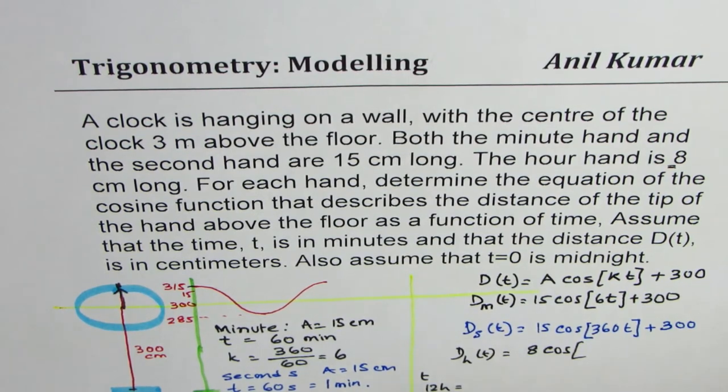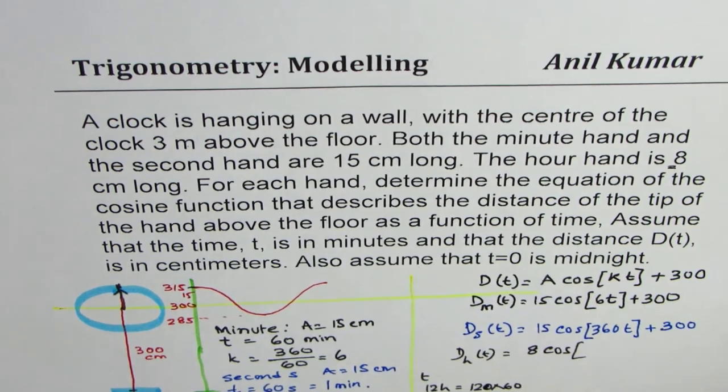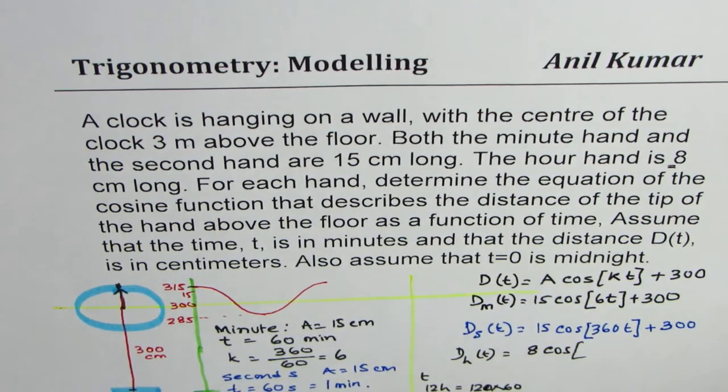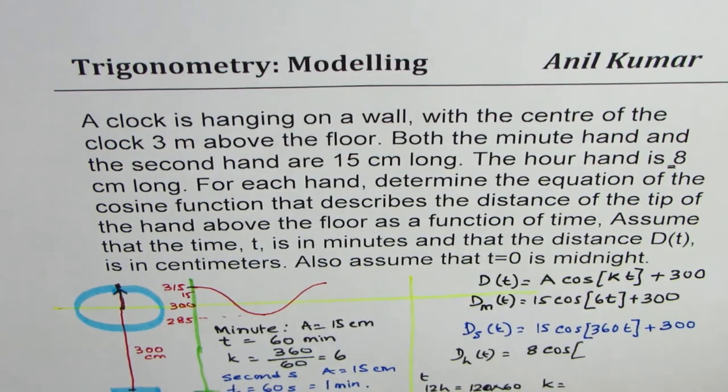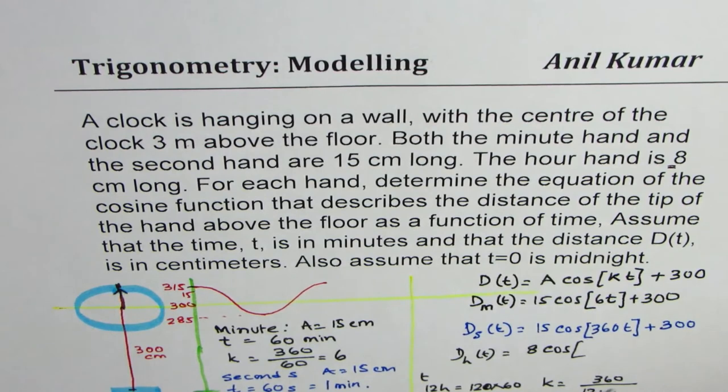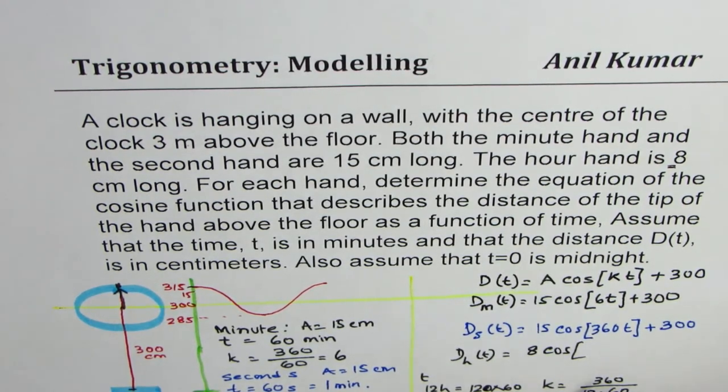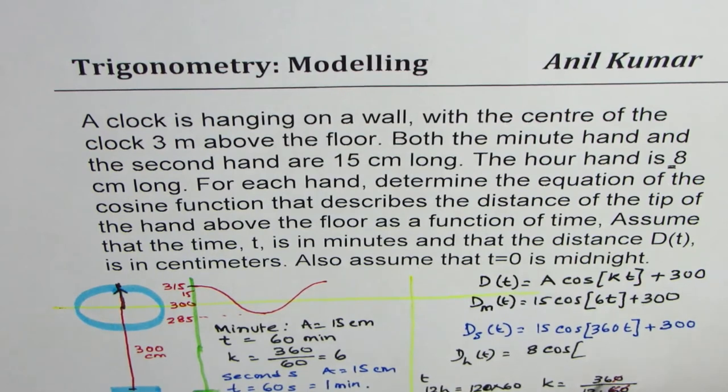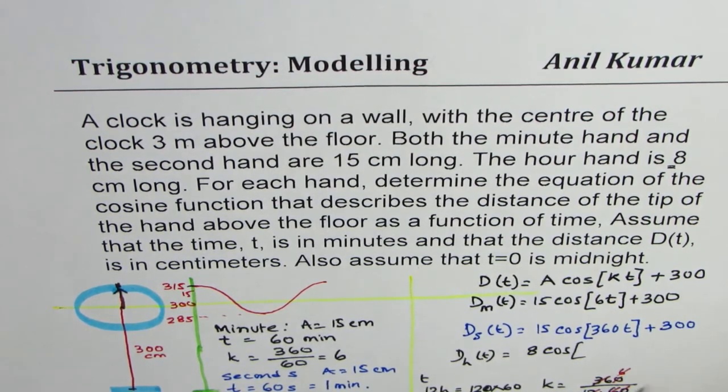12 hours is how many minutes? So in every hour, we have 60 minutes. So just 12 times 60. So that becomes the time in minutes. And that gives you the k value as 360 divided by 12 times 60. So we could simplify this. So k is half for us.